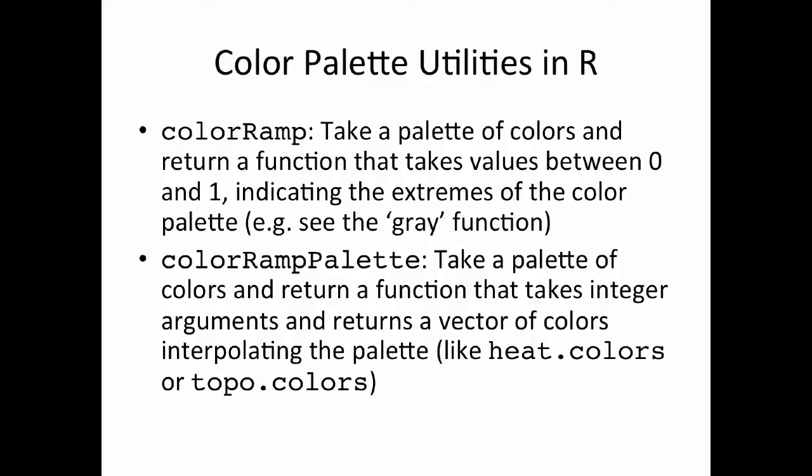colorRampPalette is a very similar type of function. It takes a palette of colors and returns another function that, rather than taking a value between 0 and 1, takes an integer argument and returns a vector of colors interpolating that palette. This is similar to the heat.colors or topo.colors functions.